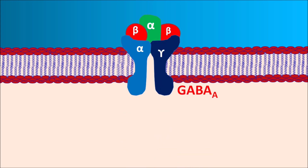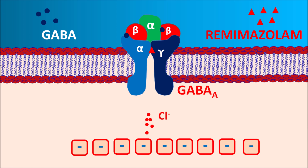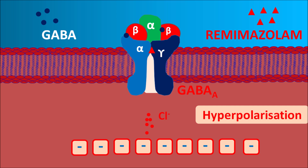Remimazolam mainly acts on GABA-A receptors, which are ionotropic receptors coupled with chloride channels. GABA acts on these receptors to produce hyperpolarization, but this action of GABA is more facilitated in the presence of remimazolam. The drug binds to GABA-A receptors between the alpha and beta subunits, causing opening of chloride channels, leading to increased negative potential within the membrane, resulting in hyperpolarization and an inhibitory response that reduces neuronal activity.